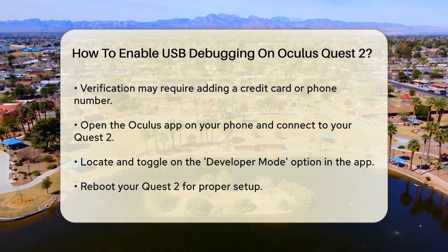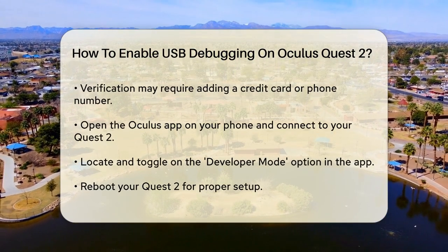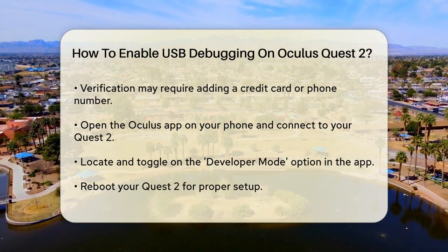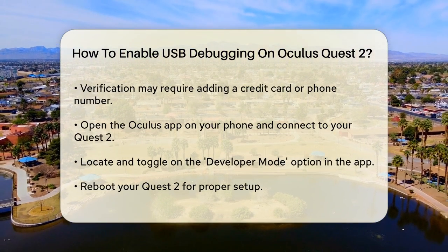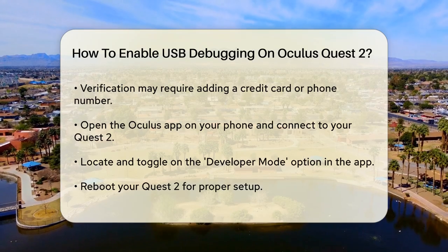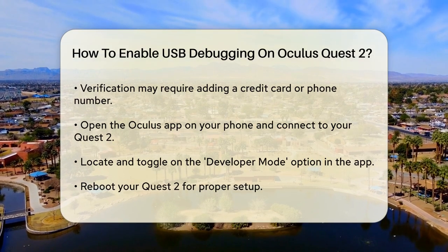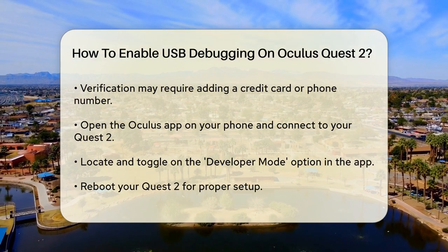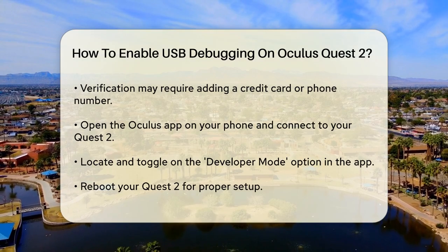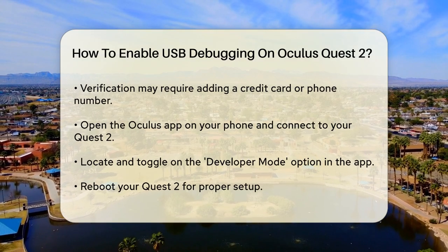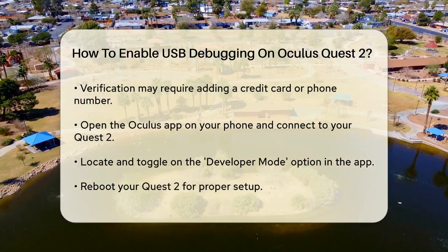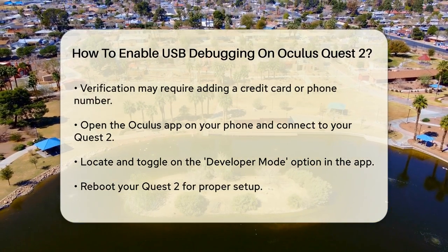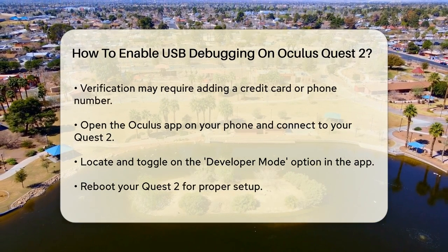Once you're registered, open the Oculus app on your phone, select your Quest 2 device, and make sure it shows as connected. Scroll down and find the Developer Mode option, then toggle it on. You might want to reboot your Quest 2 to ensure everything is set up correctly.